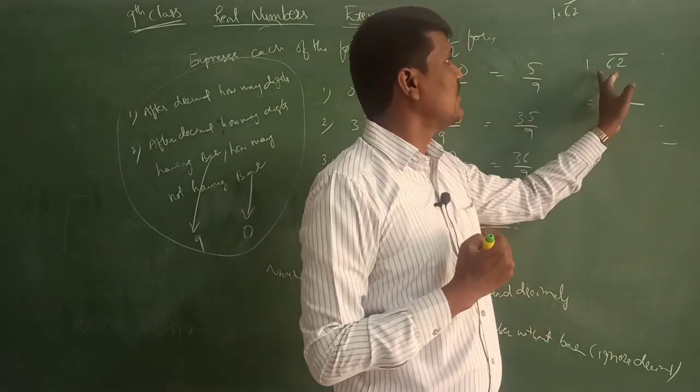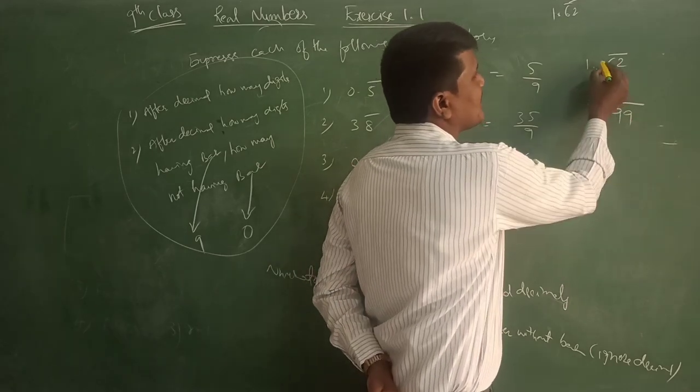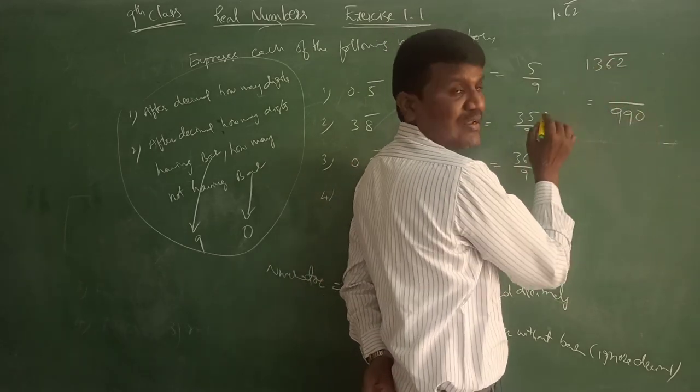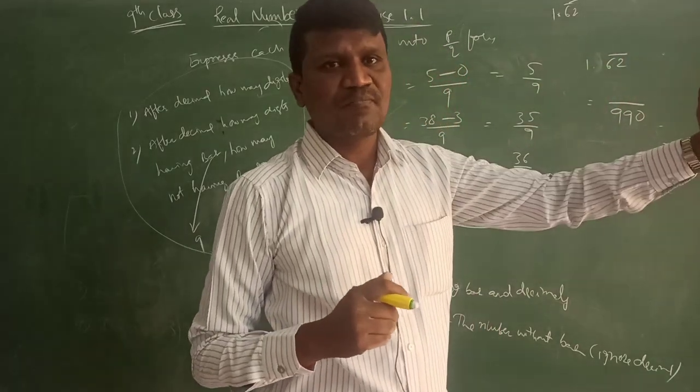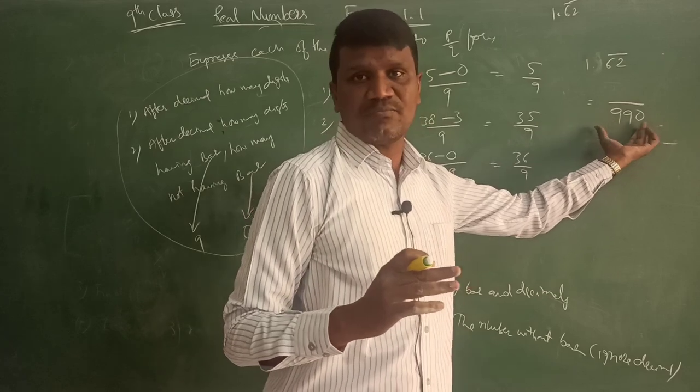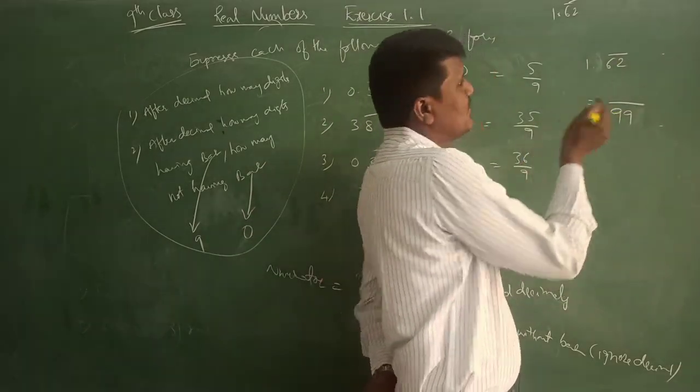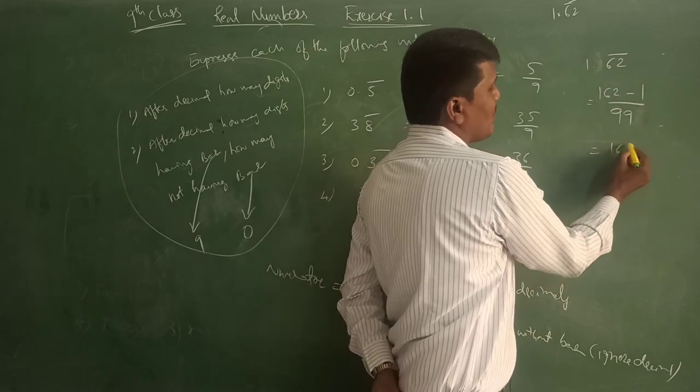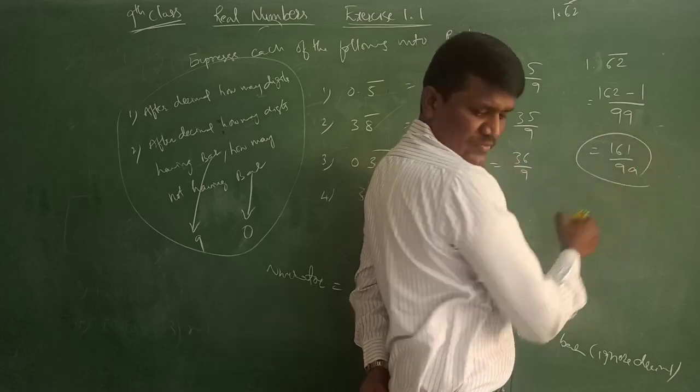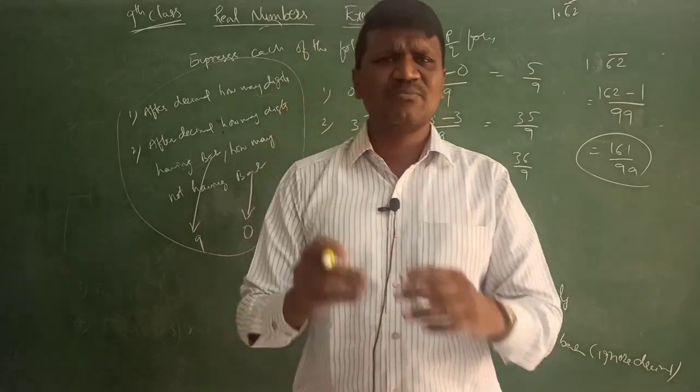In the denominator, what is it? The bar will be 9. After decimal, how many digits? Two. So it's 99. For the numerator: total number minus what's before the bar. So here 1.62 bar is 162 minus 1, which is 161 by 99. Is this the answer? Yes. 161 by 99 is the answer. How much time did it take?